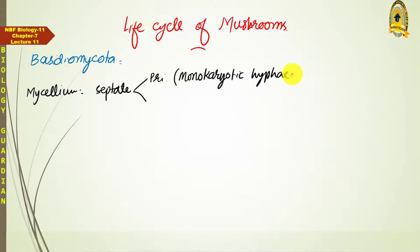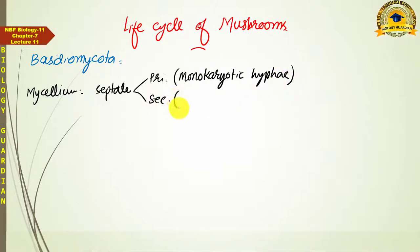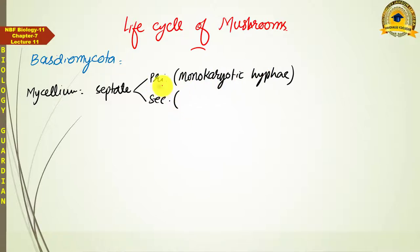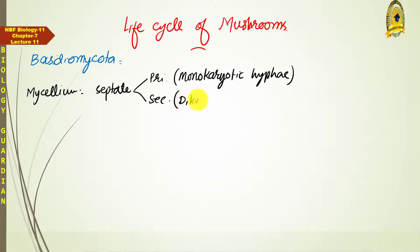And when diakaryotic hyphae exist in the mycelium, it is called secondary mycelium. So in the life cycle of mushroom — which is a member of Basidiomycota — you will see both mycelia: primary mycelium consisting of monokaryotic hyphae, and secondary mycelium consisting of diakaryotic hyphae.